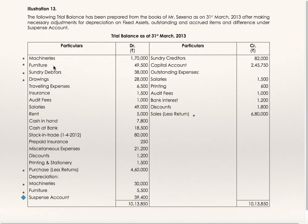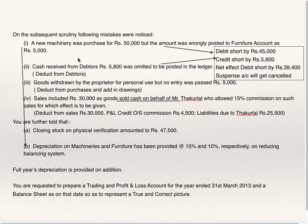If you go to the trial balance, machinery is 1,70,000. They have deducted depreciation of 30,000 from this. Furniture is 49,500 and they have deducted 5,500 from furniture. This machinery and furniture balance is after deducting depreciation of 30,000 and 5,500. So if you add back this depreciation to the respective assets, you will get the opening balance of these assets. Afterwards, you are supposed to depreciate machinery and furniture at 15% and 10% on the reducing balance method.